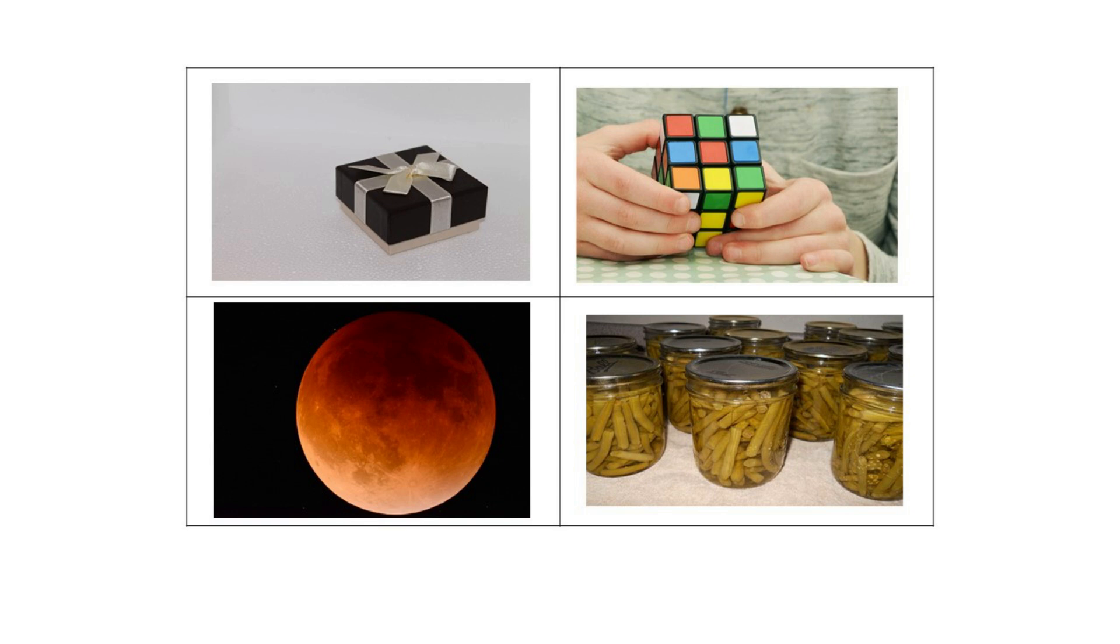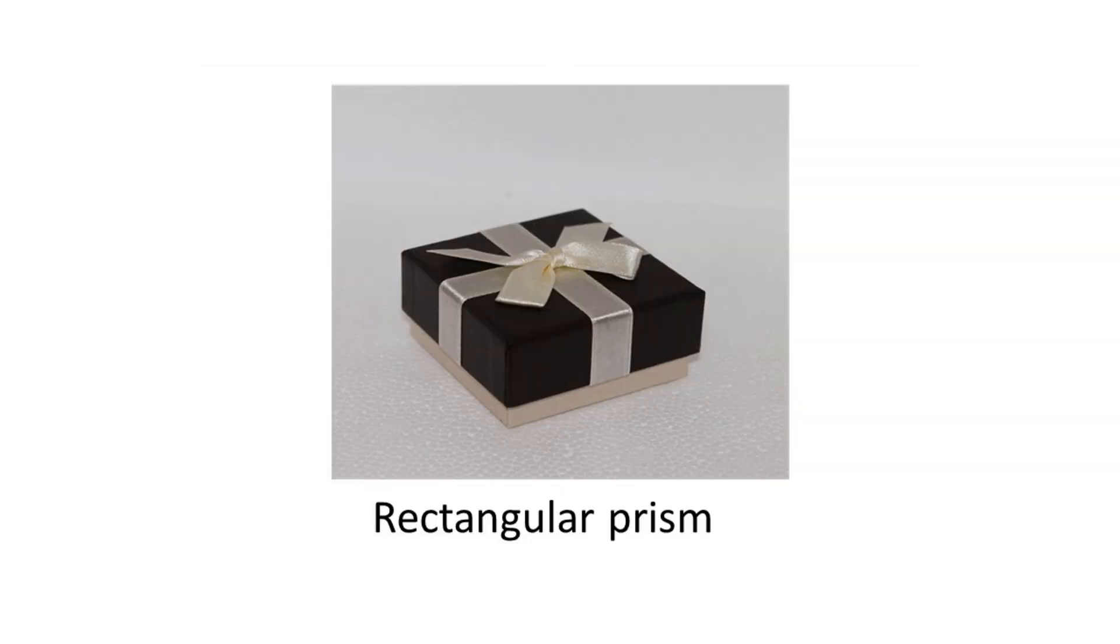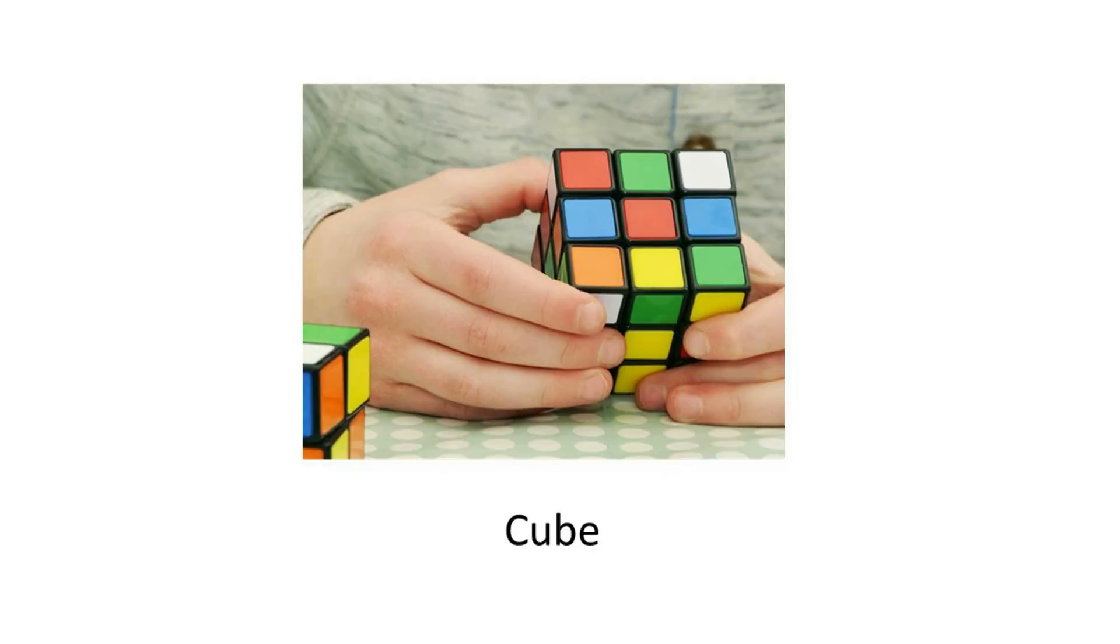Take a look. Can you name the 3D shapes that are found in the real world? A gift box may be in the shape of a rectangular prism. Here's a Rubik's Cube. The name tells you it's a three-dimensional shape.